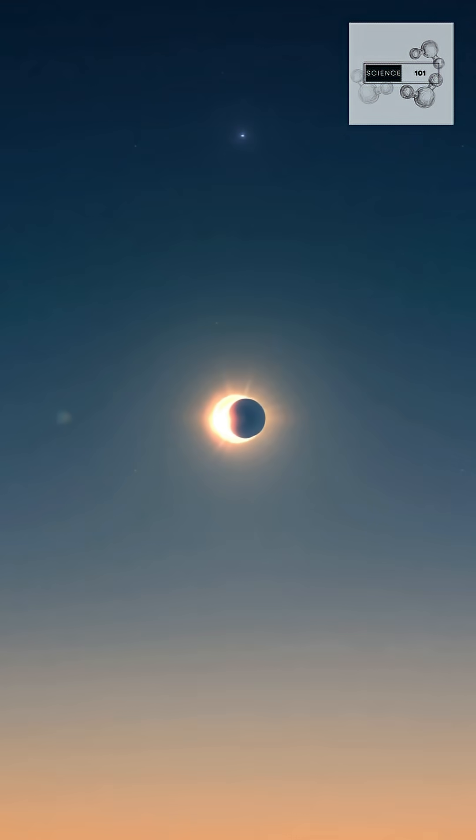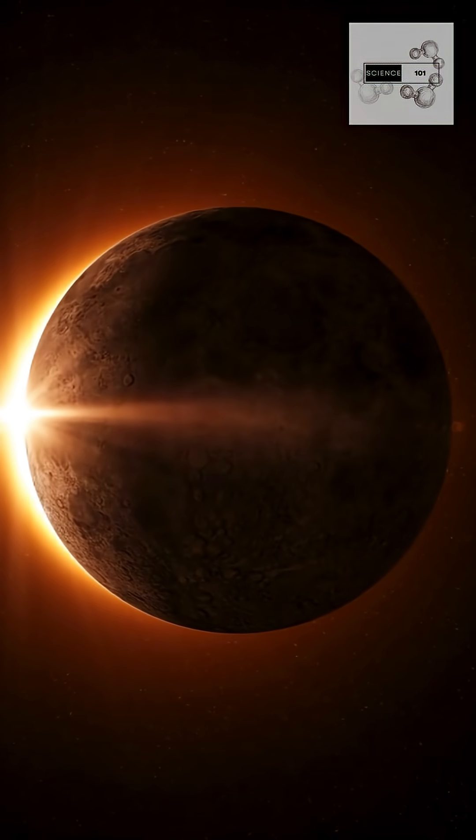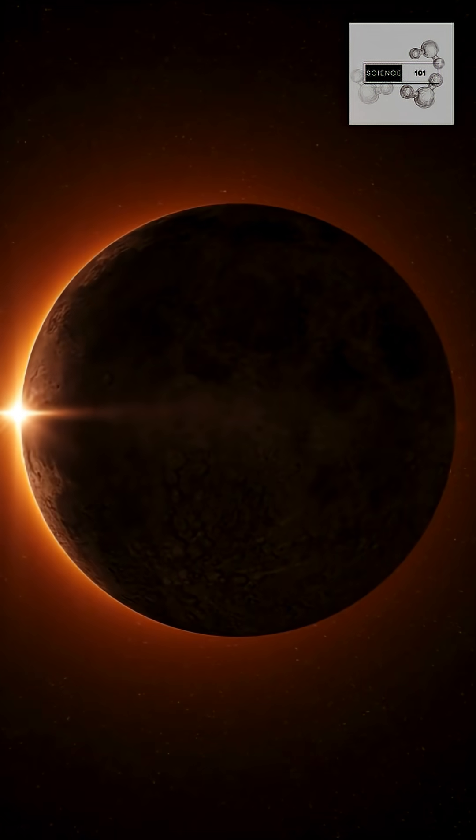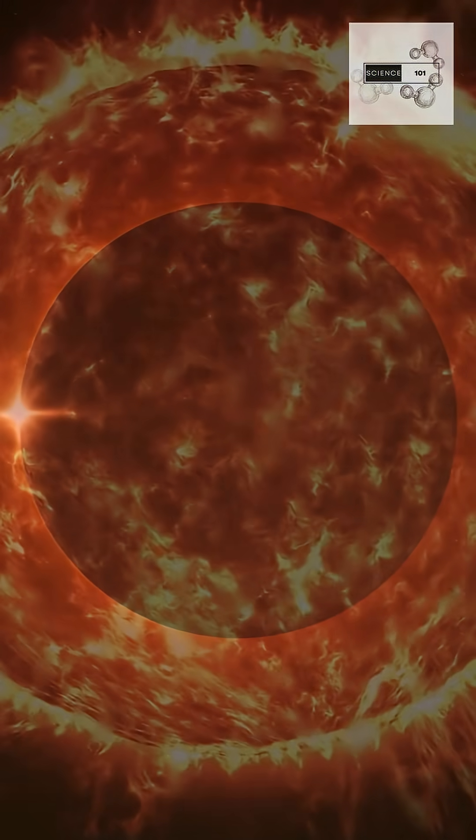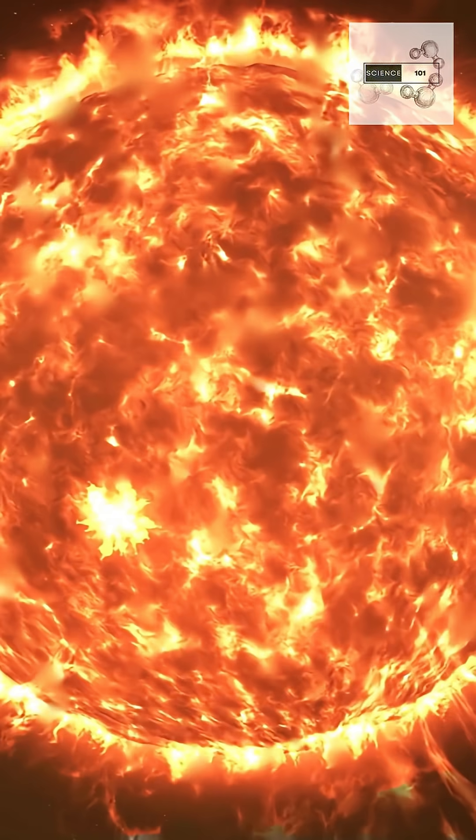One acts as an artificial moon, casting a precise shadow. The other, a telescope, peers into the solar corona, the halo of heat and magnetism that crowns the Sun.